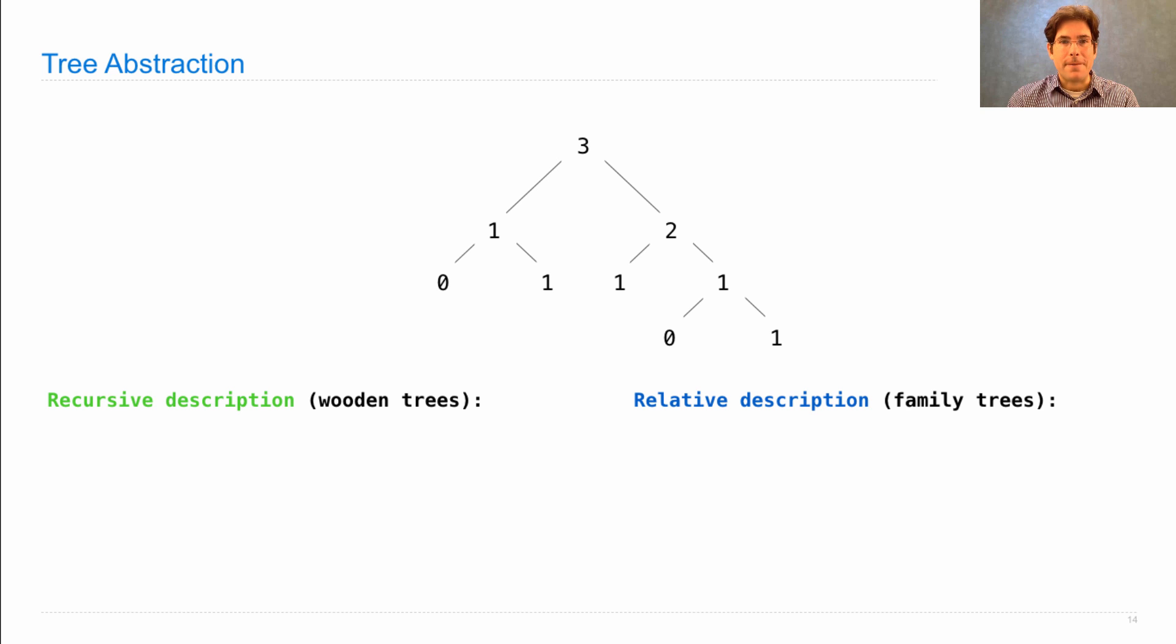Let's look at the recursive description first because that's what's going to define our implementation. A tree has a root value and a list of branches. Here's the root value three. Here's one of the branches, and the other branch is this whole subtree here. Now each branch is a tree, and that's why this is a recursive description.